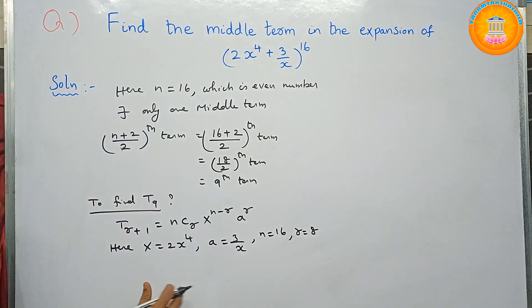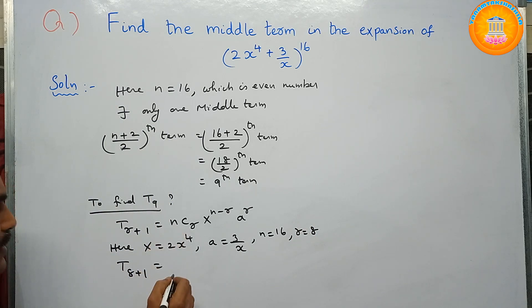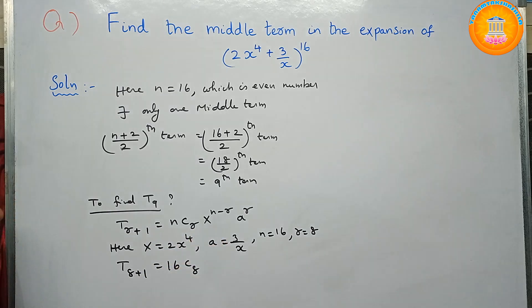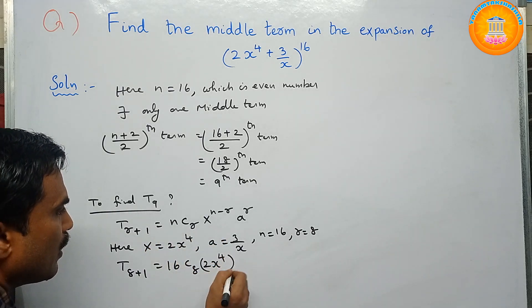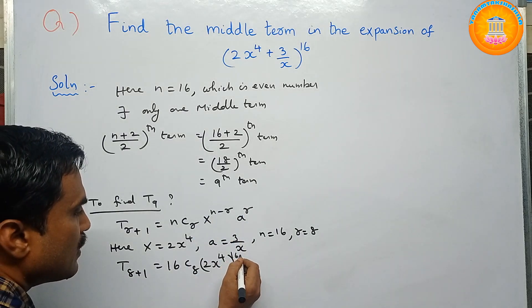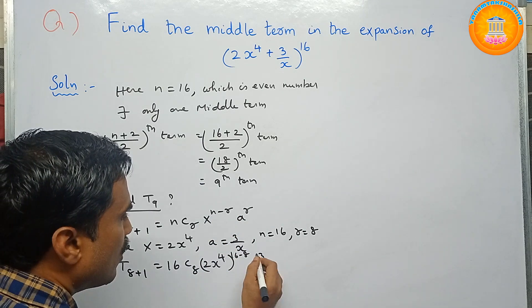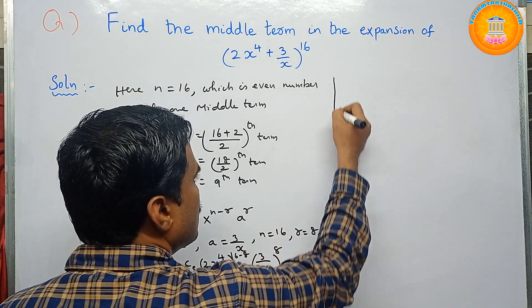Substituting all values into the formula: T_(8+1) = 16C8 · (2x^4)^(16−8) · (3/x)^8. Since 16 − 8 = 8, this becomes 16C8 · (2x^4)^8 · (3/x)^8.